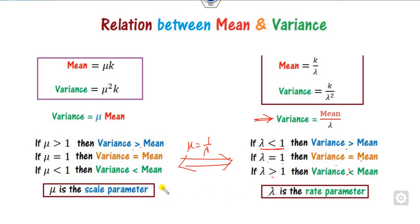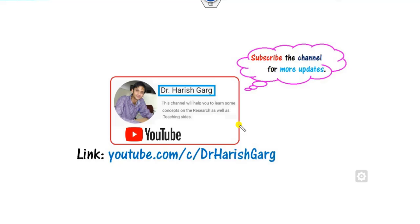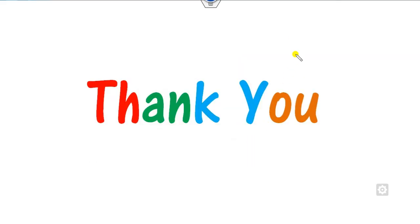This is the simple proof of the mean and variance. We will see the moment generating function, characteristic function, and properties of the Erlang distribution in our next class. Till then, you can follow the link to find the videos. Best of luck, students.